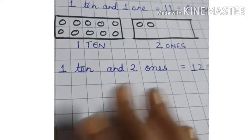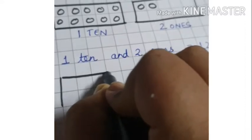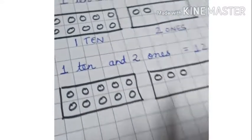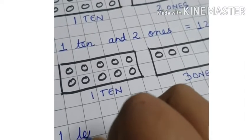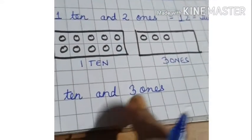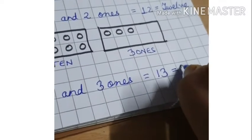So do not draw too many boxes in one page. Try to make the page a little tidier. So I will only make one more box. So what do you have to write here? One ten and three ones. What do you have to write here? One ten and three ones is equal to thirteen. You write the number also: thirteen.